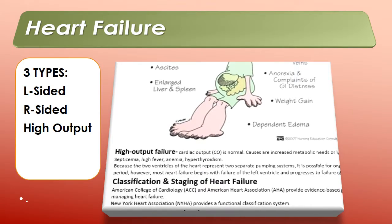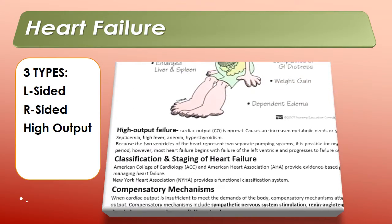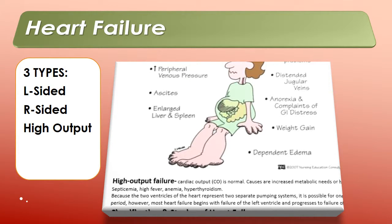The third type is high output heart failure. In high output heart failure, cardiac output is normal, but causes of increased metabolic needs or hyper-dynamic conditions can cause this, such as high fever, anemia, and septicemia. This is just a quick overview of the heart failure types.